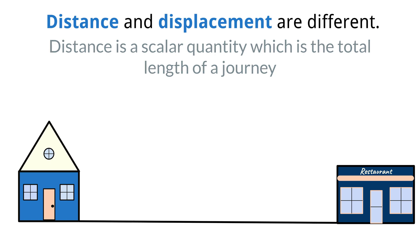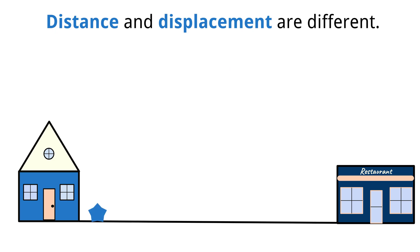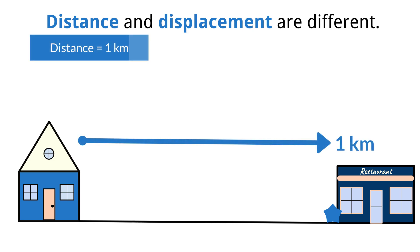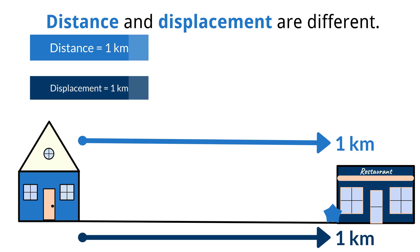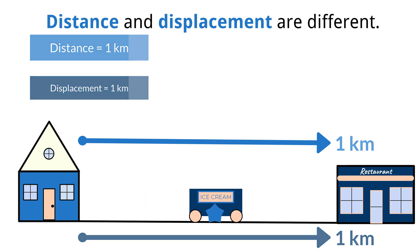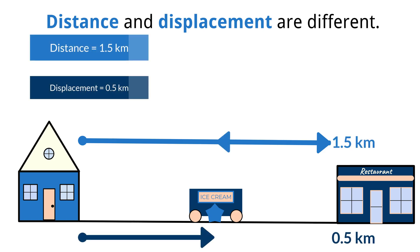We can illustrate the difference between distance and displacement by looking at the following example. Imagine you are traveling from your home to a restaurant that is 1 kilometer away. When you reach the restaurant, you would have traveled a distance of 1 kilometer and your change in position would be 1 kilometer from your home. At this point, the values of displacement and distance are equal. Now, imagine you start to travel back to your home and halfway home you find an ice cream truck and stop to buy some ice cream. At this point, you would have traveled a total distance of 1.5 kilometers, but your displacement or change in position from your home is only 500 meters. This illustrates the difference in the meaning of the values of distance and displacement.